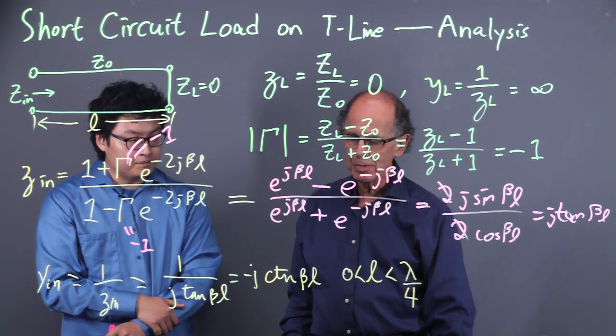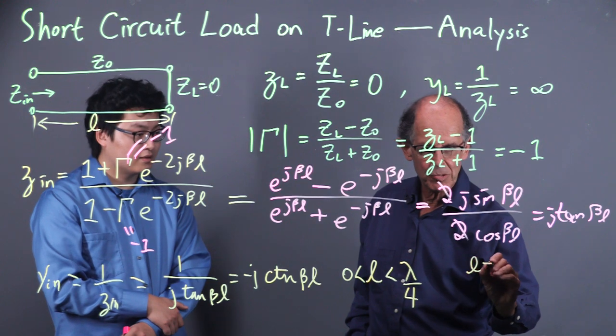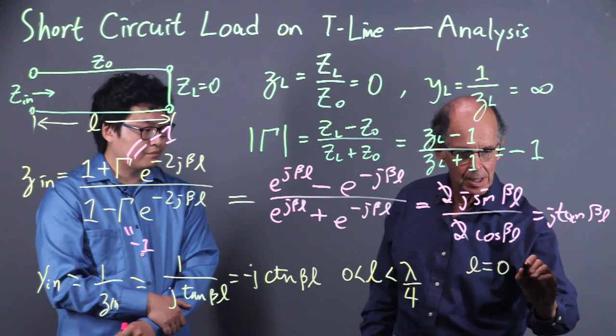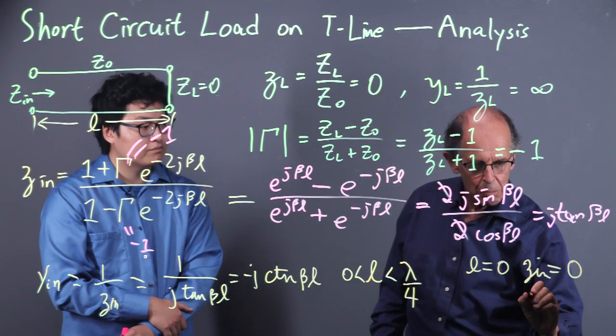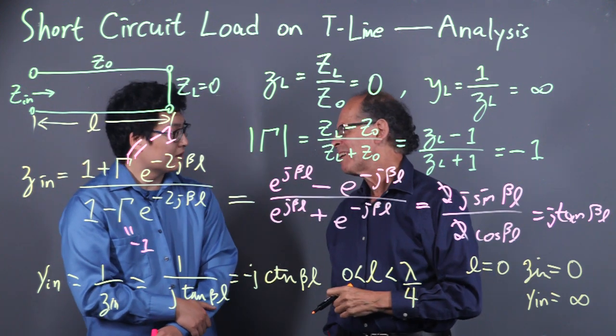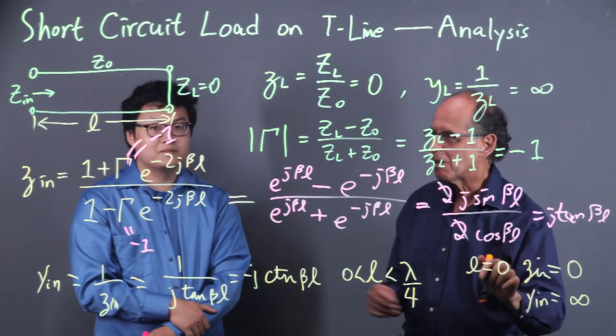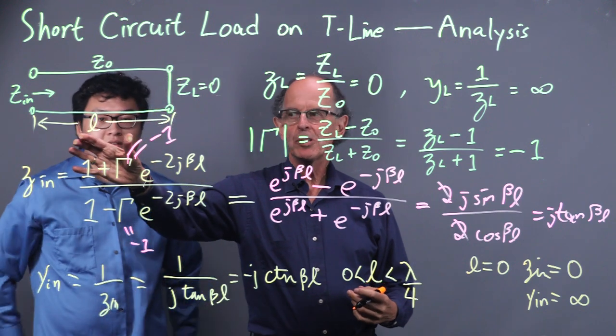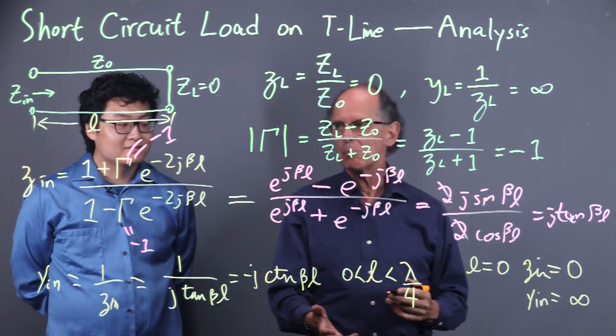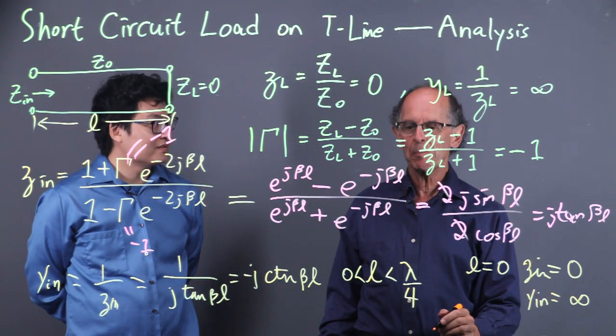So 0 less than L less than lambda over 4. When L is 0, Z N would be 0, but Y N would be infinite. Not very physical. I don't like infinities. But L equals 0 doesn't make sense anyway. Then you don't have a transmission line. So L is always bigger than 0, and we never have to worry about infinity. Only mathematicians worry about infinity.